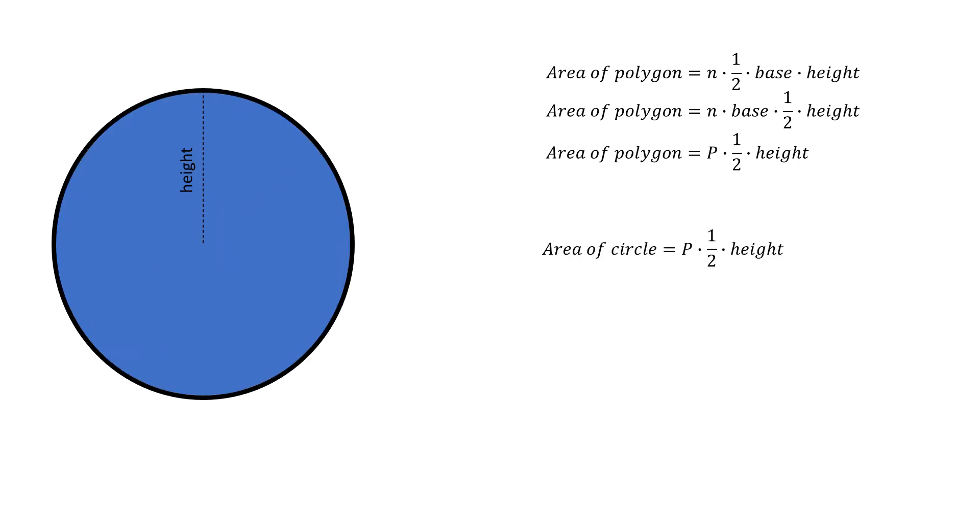But now we want to find the area of the circle. So if I extrapolate my polygon out to the perfect circle, what's the perimeter of a circle called? Right, it's called the circumference. So now for the area of the circle, we have P replaced with C, perimeter replaced with circumference, and our height, since it's now a circle, is replaced with R, our radius. So the area of a circle equals C times a half times R.